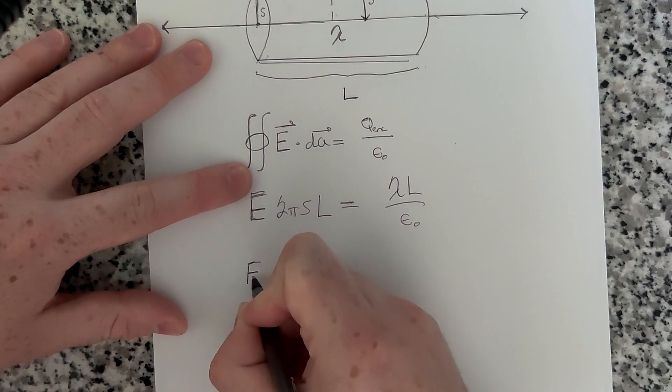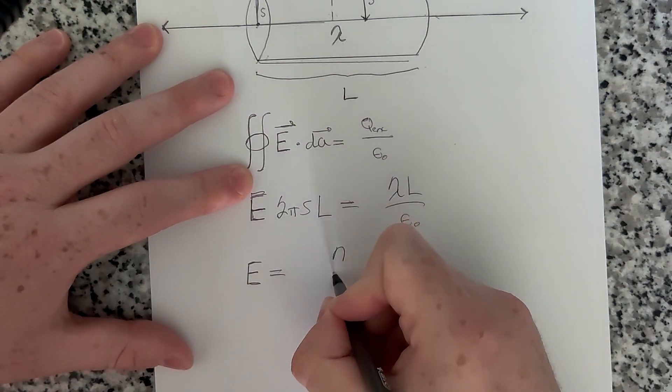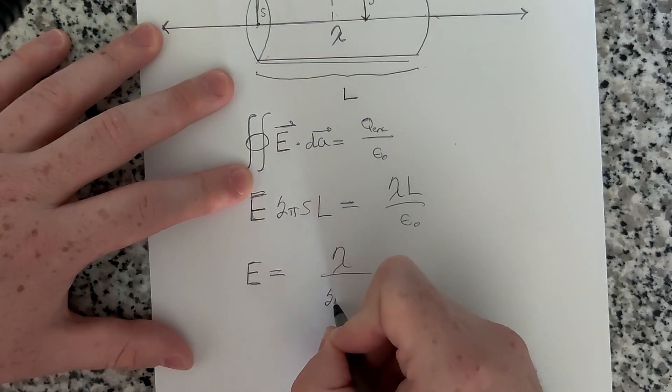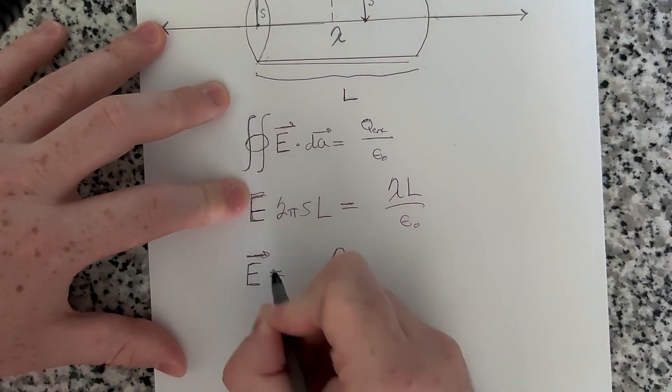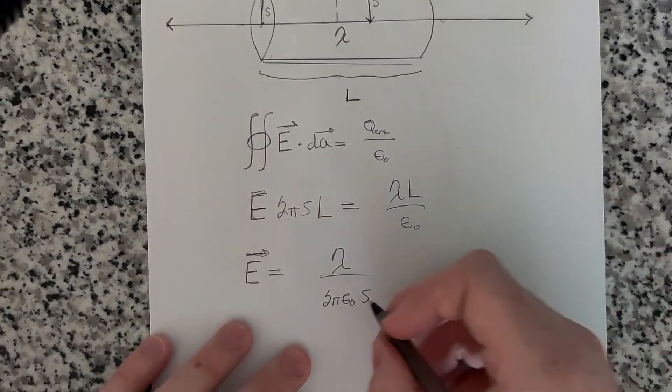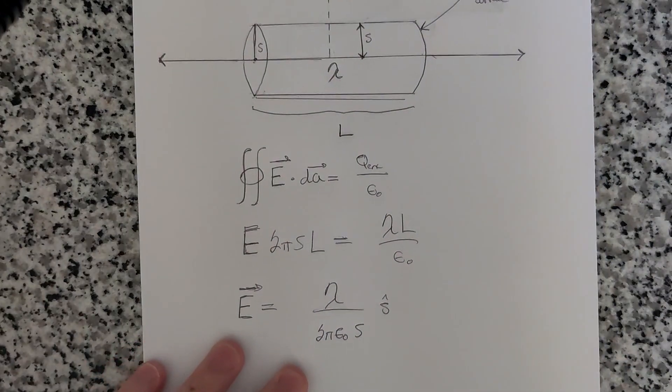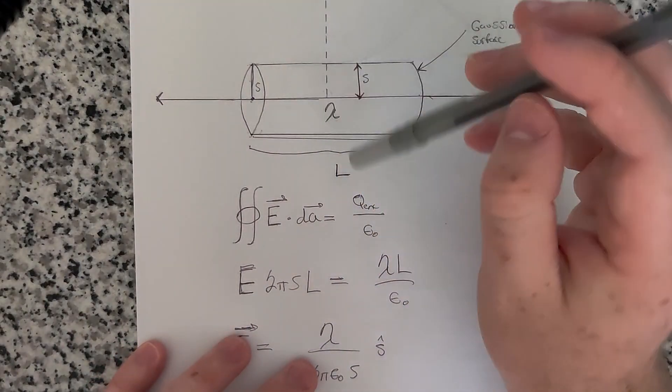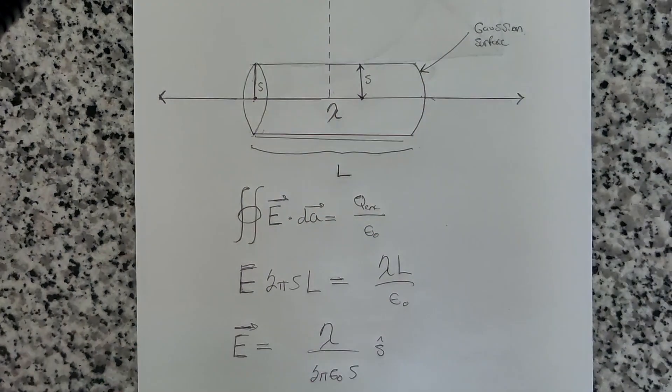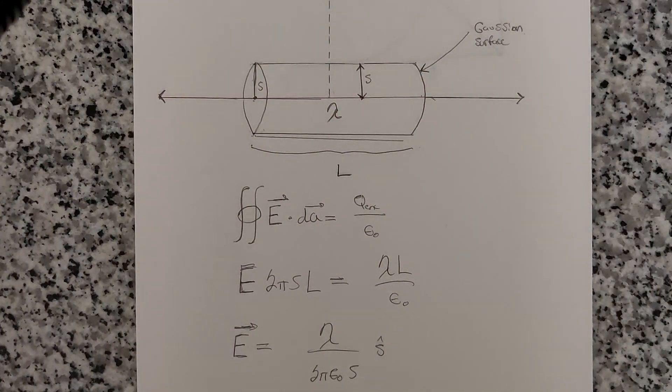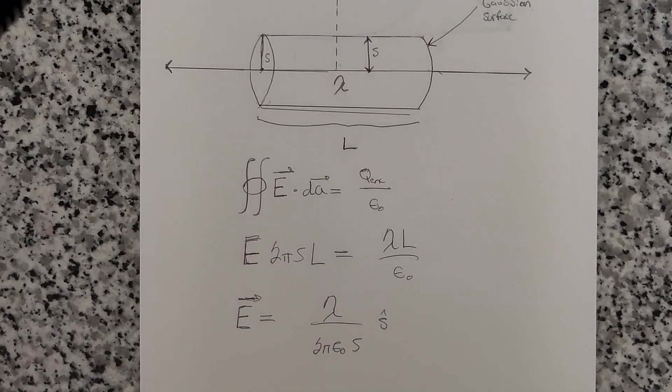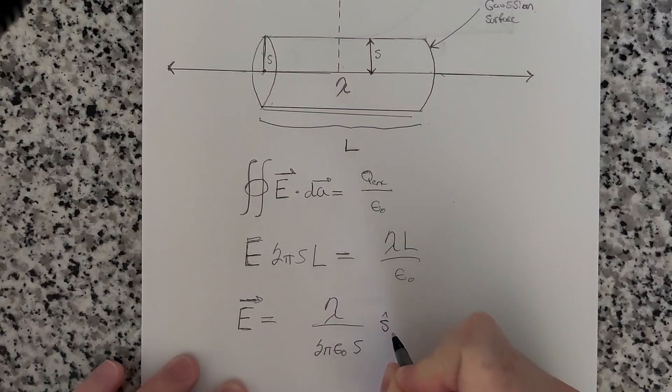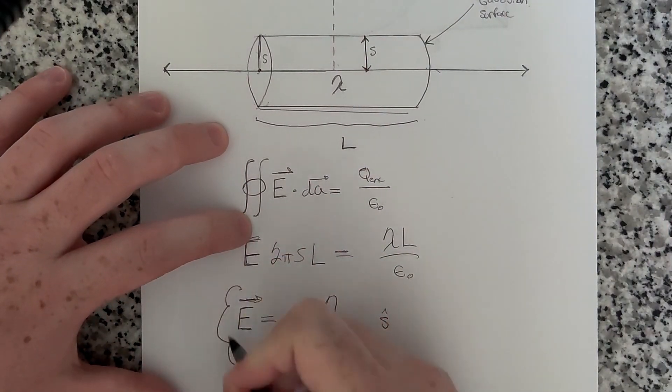And that gives us that the electric field magnitude is equal to lambda over 2 pi epsilon naught s. And the direction, since this is in cylindrical coordinates, we can just say that this is in the s hat direction, in the direction away from the axis of symmetry of the cylinder. If you're not familiar with cylindrical coordinates, just look them up and get some familiarity with that. And I think this will make sense why we say it's in the s hat direction. All right. So this is our answer.